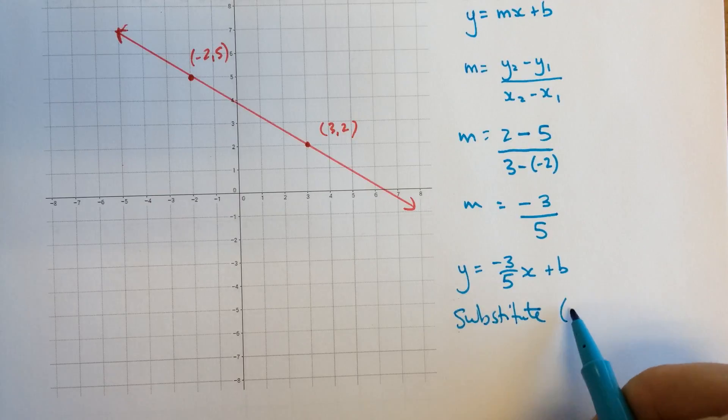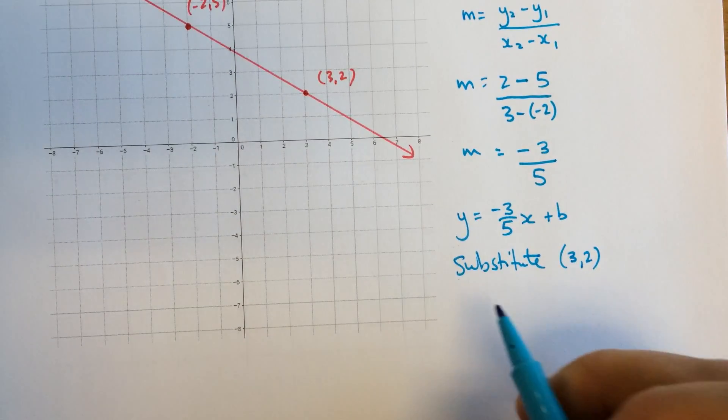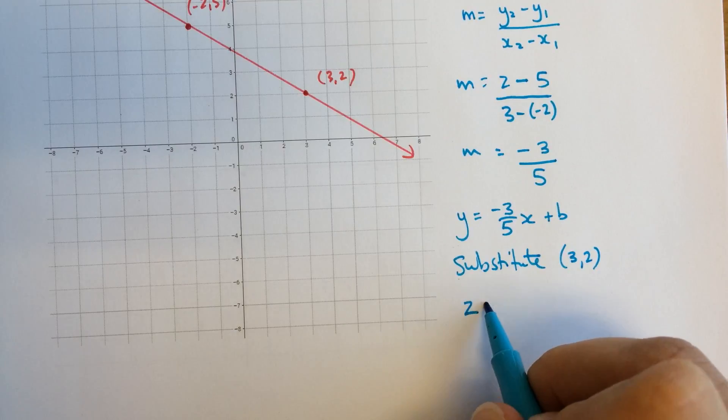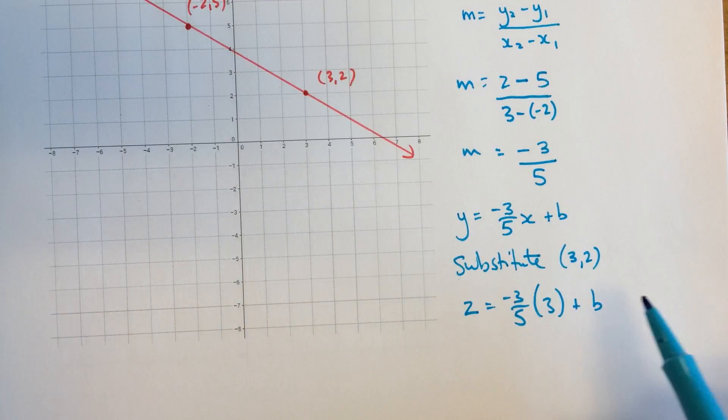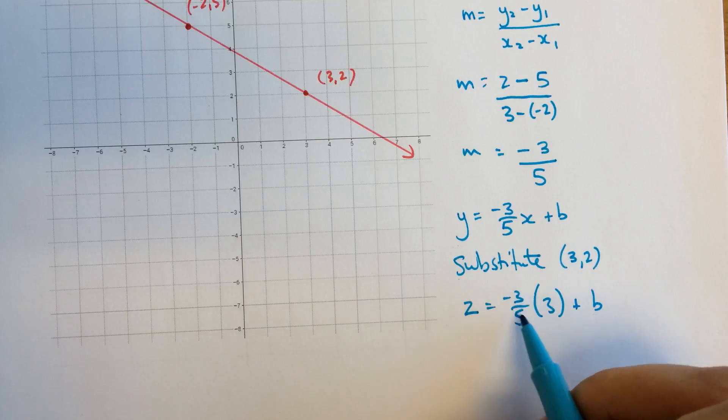And I think I'll substitute 3, 2. Let's avoid the negatives. So the y value is 2. The x value is 3. And I'm looking to find b. I've substituted in for all the variables I can. I just don't know what b is.